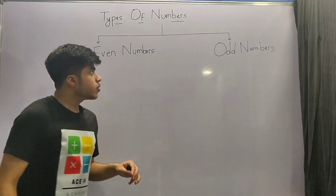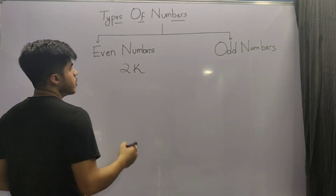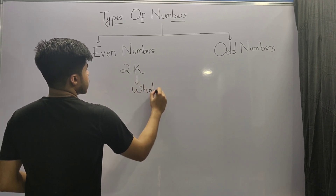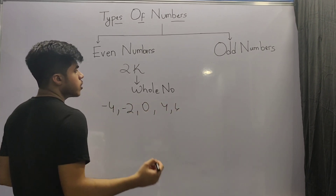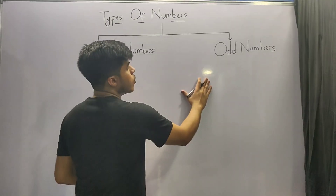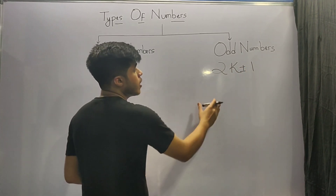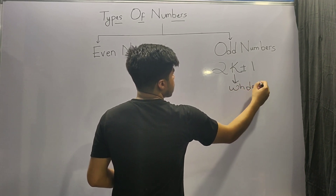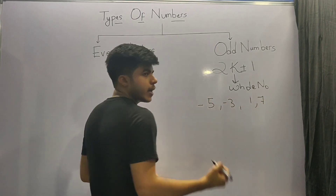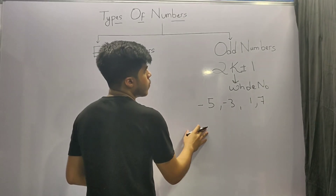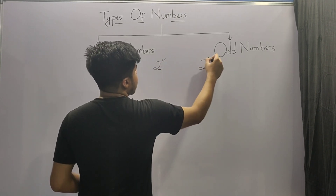In our next classification we have even numbers and odd numbers. The numbers which can be represented in the form of 2K are known as even numbers, where K is a whole number. So all numbers like minus 4, minus 2, 0, 4, 6, and so on are considered as even numbers. The numbers which can be represented in the form 2K plus or minus 1 are known as odd numbers, where K is once again a whole number. So all numbers like minus 5, minus 3, 1, 7 are known as odd numbers. In simple terms, even numbers are multiples of 2 and odd numbers are non-multiples of 2.